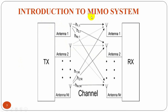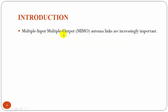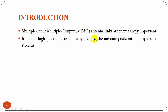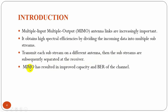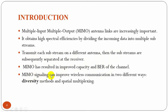This is a MIMO system — multiple input multiple output — which uses diversity at both the transmitter and receiver with two or more antennas. MIMO and antenna links are important because they obtain high spectral efficiency by dividing the incoming data into multiple substreams. Each substream is transmitted on a different antenna, and then the substreams are separated at the receiver. MIMO has resulted in improved capacity and bit error rate of the channel. MIMO signaling can improve wireless communication in two ways: diversity methods and spatial multiplexing. Here we are going to focus on diversity methods.